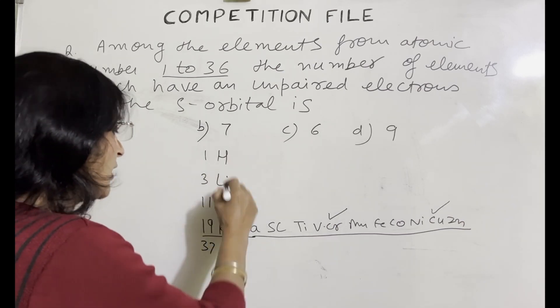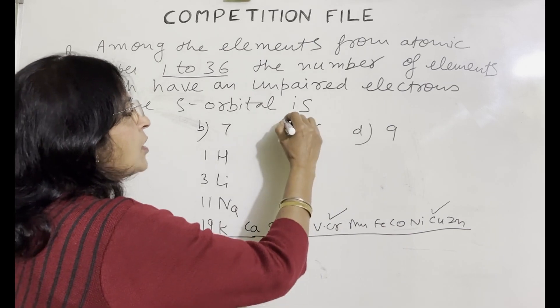So total number will be 1, 2, 3, 4, 5 and 6. So answer will be C.